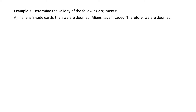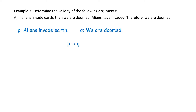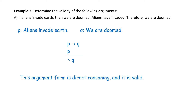Example. Determine the validity of the following argument. Part A: if aliens invade Earth, then we are doomed. Aliens have invaded, therefore we are doomed. Let P be 'aliens invade Earth' and Q be 'we are doomed.' Symbolically: P → Q, P, therefore Q. This argument form is called direct reasoning, and it is valid.